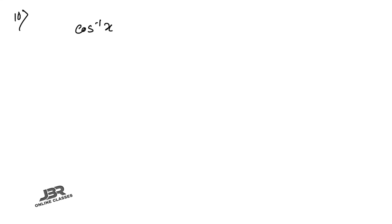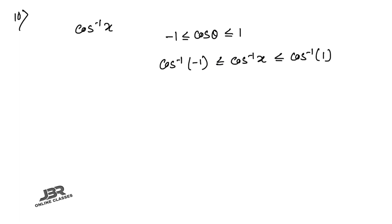Sum number 10: Write the range of one branch of cos⁻¹(x) other than the principal branch. Since −1 ≤ cos θ ≤ 1, the principal range is [0, π]. The periodicity of cos⁻¹(x) is π, so the next branch is [π, 2π]. Therefore the answer is [π, 2π].